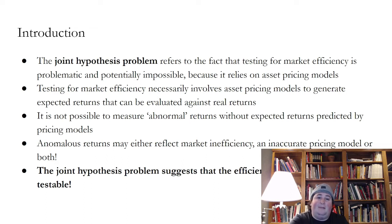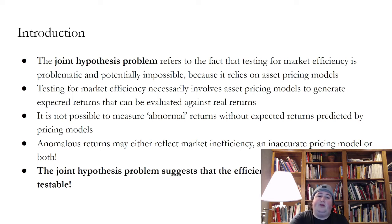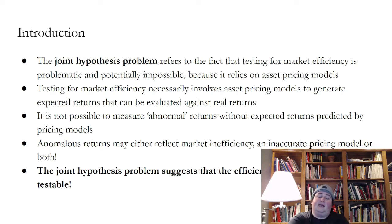We don't know, for example, if the CAPM is right. Does CAPM produce expected returns that are correct? Are those expected returns actually what Coca-Cola should be earning every year? Because we literally don't know the answer to that question, if Coke produces returns that are meaningfully different from what CAPM tells us Coke should be earning, we don't know if CAPM is wrong — giving us the wrong expected return — or if the efficient market hypothesis is wrong and the market is just not efficient.